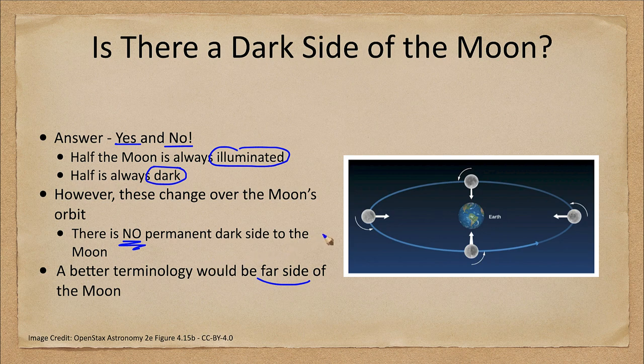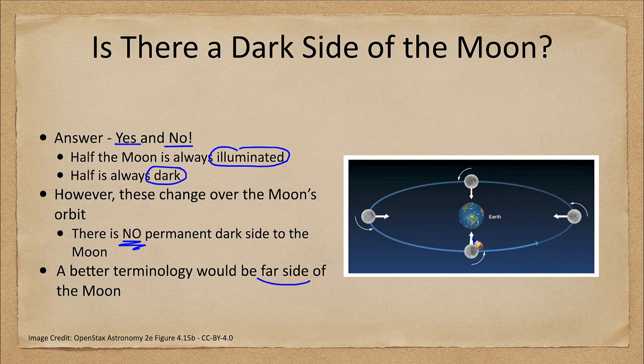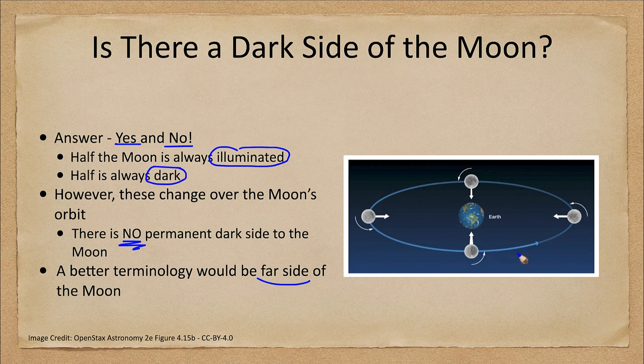And we can see that in the orbital diagrams here. The moon rotates just as fast as it spins on its axis. So that means that one side of the moon is always away from Earth.